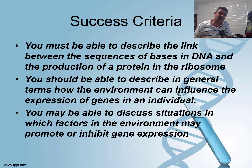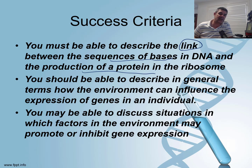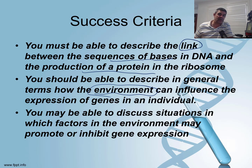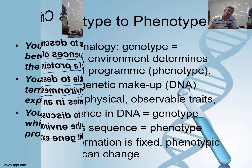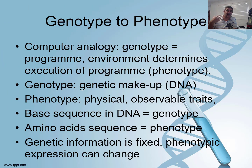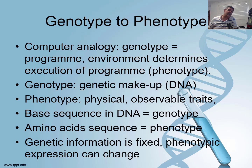In order for us to do this, we need to make sure we've got an understanding of the link between the sequence of bases in DNA and the production of a protein — that's what protein synthesis is. We also need to look in general terms at environmental influence and situations that may contribute to the promotion or inhibition of gene expression. DNA stores information in the sequence of bases, and polypeptide production in the ribosome requires a transcription process to read the DNA and a translation process to turn that sequence of bases into a code for a sequence of amino acids that produces a protein.